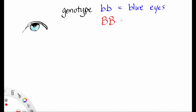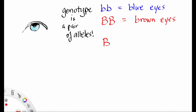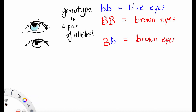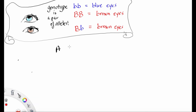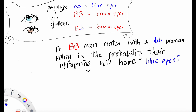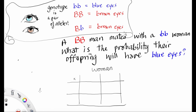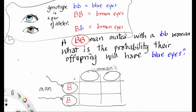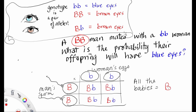We can turn this analogy back to eye color. Remember: little b, little b is blue eyes; big B, big B is brown eyes; and big B, little b is also brown eyes. Using this information, we can find the probability of offspring having different colored eyes if a big B, big B man mates with a little b, little b woman. The man's sperm is big B and big B, and the woman's eggs are little b and little b. When we combine these, all the babies would be big B, little b — so no one's going to have blue eyes. They're all going to have brown eyes, but they will be hiding the blue-eyed allele.